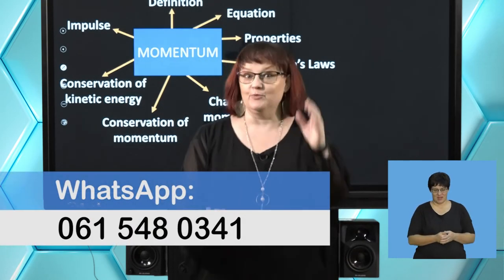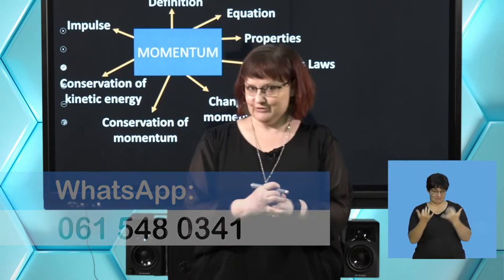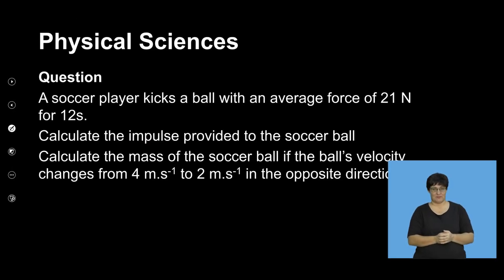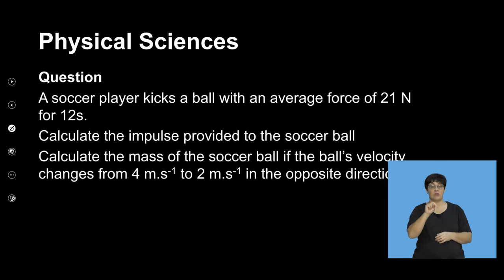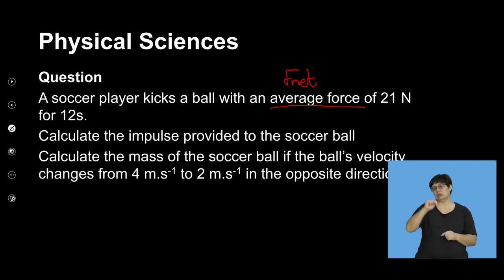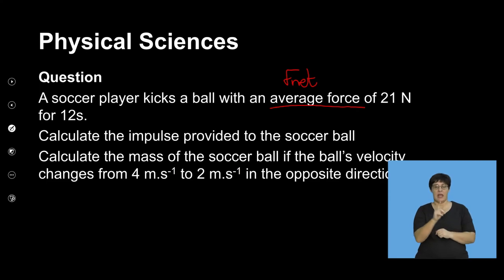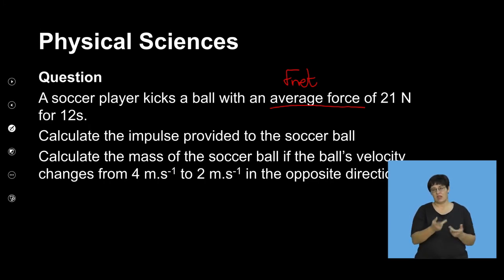Welcome back — get your calculators ready because now we're going to do some calculations and explanation questions. A soccer player kicks a ball with an average force of 21 Newtons for 12 seconds. Average force here means F net. We're going to calculate the impulse provided to the soccer ball, and then calculate the mass of the soccer ball if the ball's velocity changes from 4 meters per second to 2 meters per second in the opposite direction.